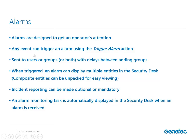Any event, like we were mentioning before — a motion detection on a camera — can trigger an alarm using the trigger alarm action. It is sent to users or groups, and we can have different delays between each one of those groups. When triggering an alarm, we can display multiple entities. We can configure the alarm to bring different entities onto our alarm monitoring task. We can also run reports or incident reports, and we can make them mandatory.